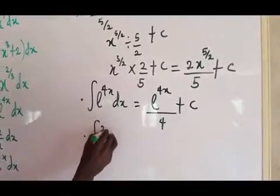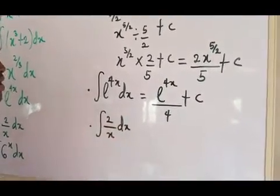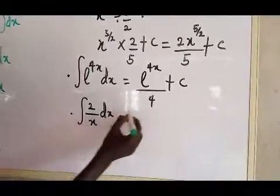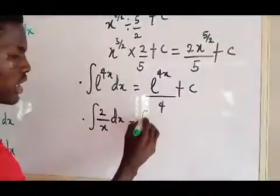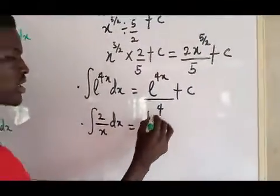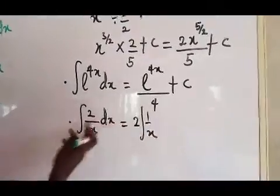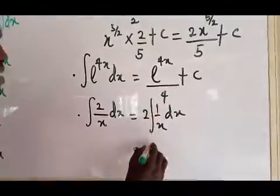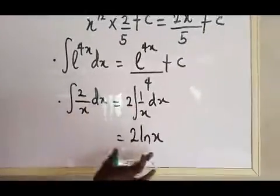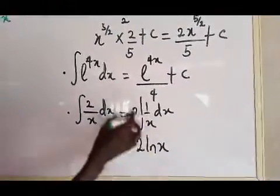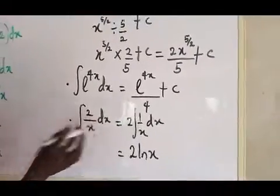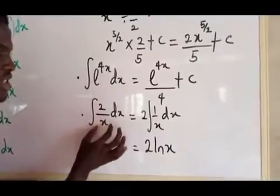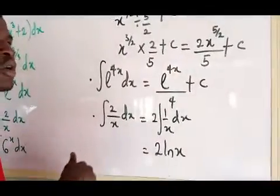The fifth example: integral of 2 over x dx. You can rewrite this as 2 multiplied by integral of 1/x dx. Now, integral of 1/x dx equals ln(x), so the answer is 2 ln(x) plus c. If you differentiate this result you get back 2 over x, confirming that integration is the reverse of differentiation.